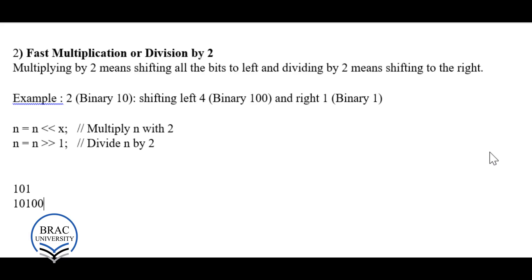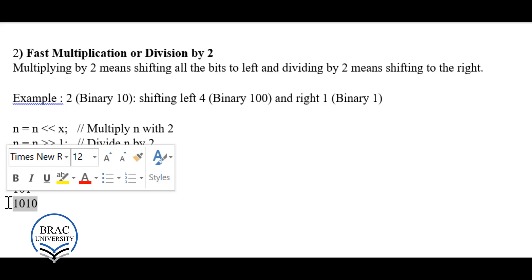Now let's look at fast multiplication or division by 2. Arithmetic operations can be costly, so to reduce cost we can use bitwise operations — specifically left shift for multiplication and right shift for division. For example, 5 in binary is 1 0 1. If we left shift it, a 0 fills the empty place, giving 1 0 1 0, which is 10. So left shifting 5 by 1 is equivalent to multiplying by 2.